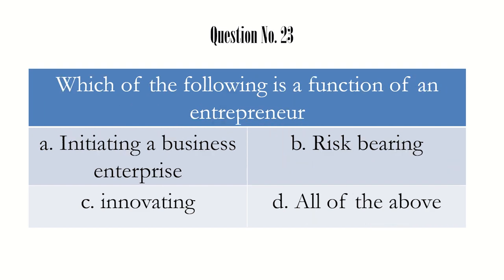Question number 23: which of the following is a function of an entrepreneur? An entrepreneur is a businessman who starts a business with some sort of innovation. The options are: initiating a business enterprise — yes, done by the entrepreneur; bearing risk — also done by the entrepreneur; being innovative in nature — also correct. So the right answer is all of the above, option D.